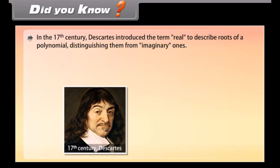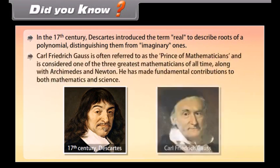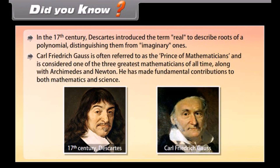Did you know? In the 17th century, Descartes introduced the term 'real' to describe roots of a polynomial, distinguishing them from imaginary ones. Carl Frederick Gauss is often referred to as the Prince of Mathematicians and is considered one of the three greatest mathematicians of all time, along with Archimedes and Newton. He made fundamental contributions to both mathematics and science.